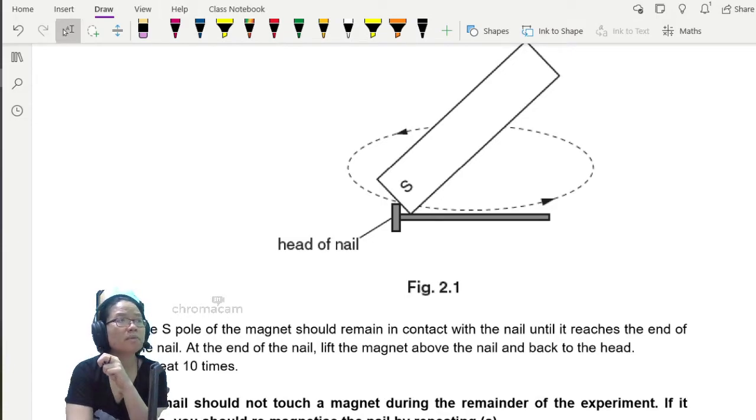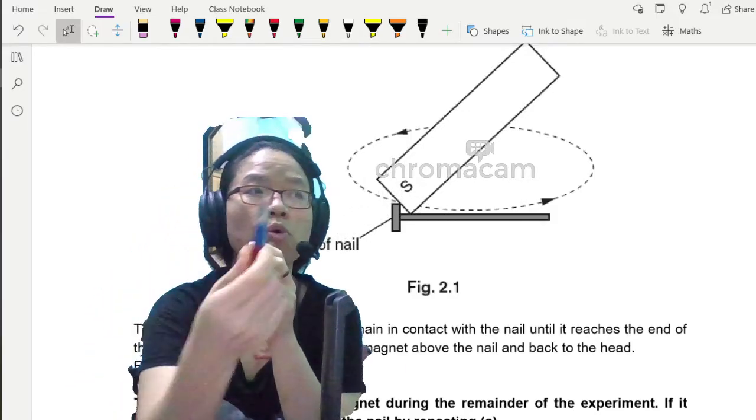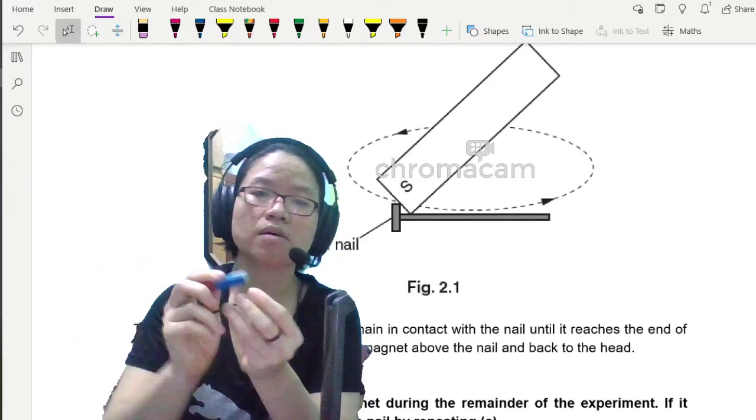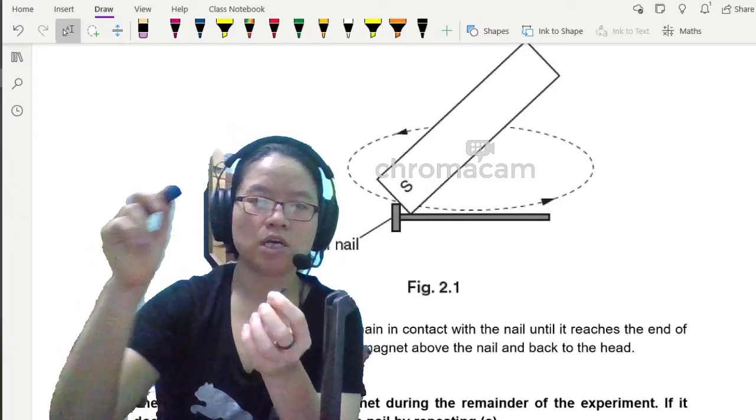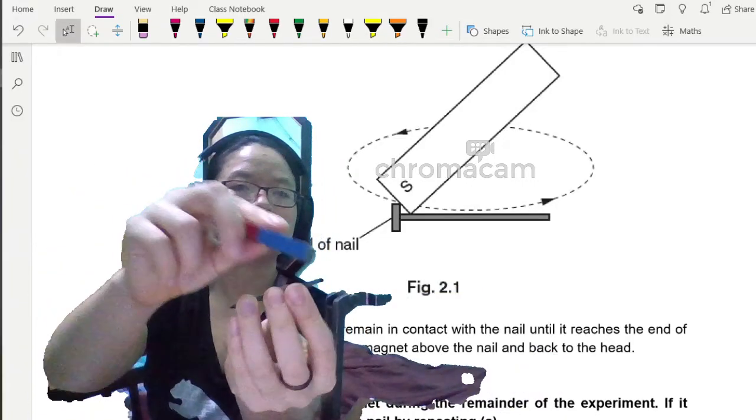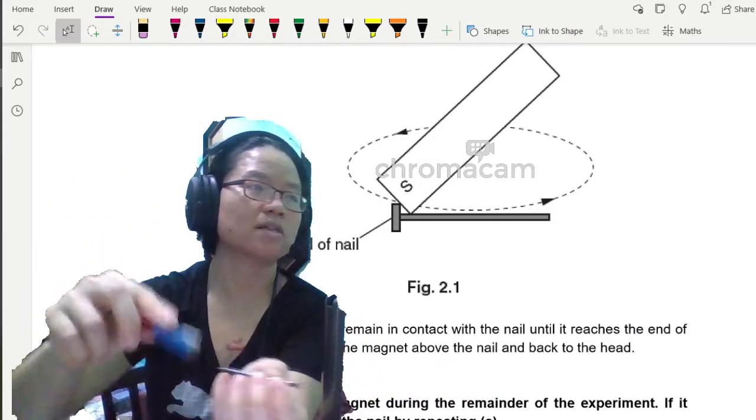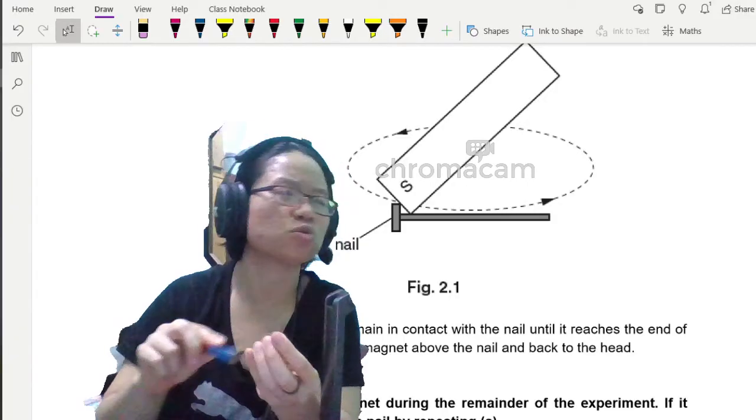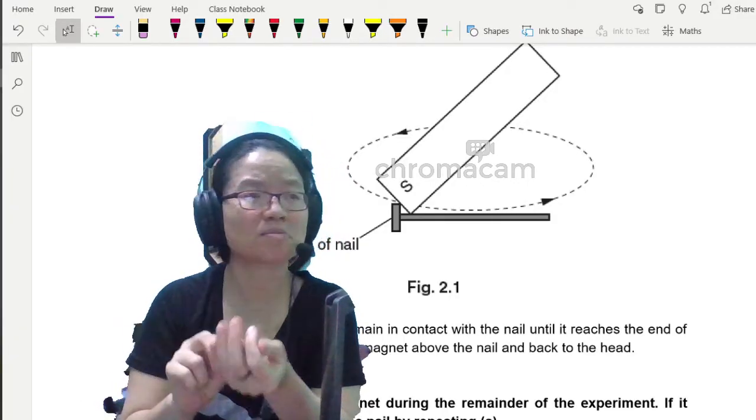Let me make myself bigger. Alright, so it would be the south pole, which is this one. Put it at the head and then go back. So basically, you're doing this process over and over again. I mean, they say 10 times, but I'll just do it until I feel like not doing it. So I generally do it more than 10 times.